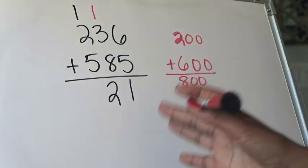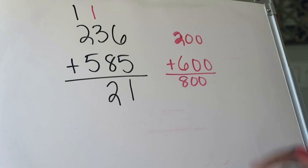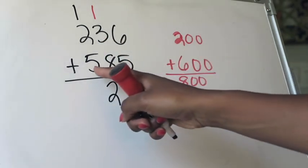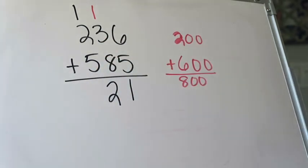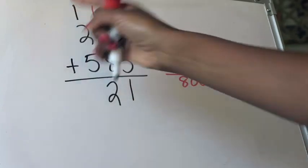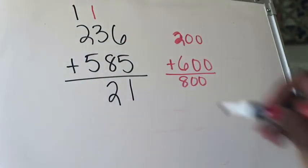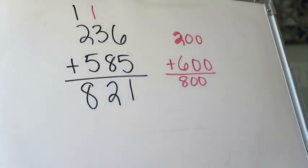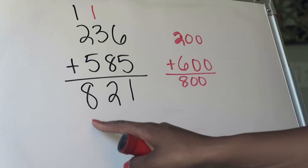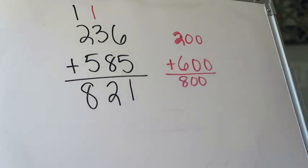Then I'm going to go to my hundreds and I'm going to add two hundreds plus five hundreds, that's going to give me seven hundreds, plus another hundred that's going to give me eight hundreds. So my final answer right now for 236 plus 585 is 821.